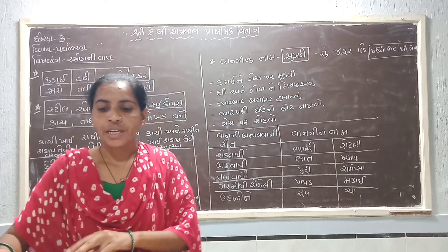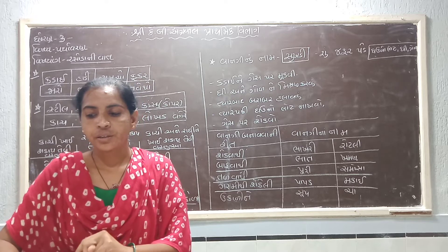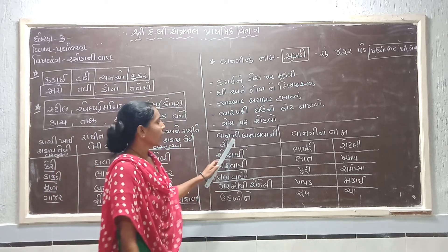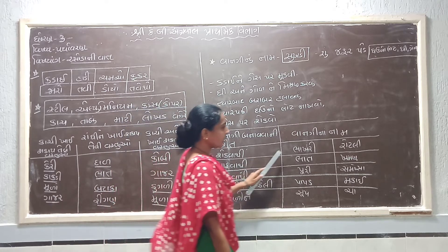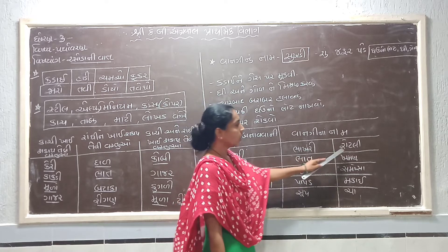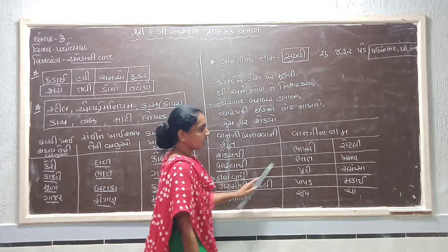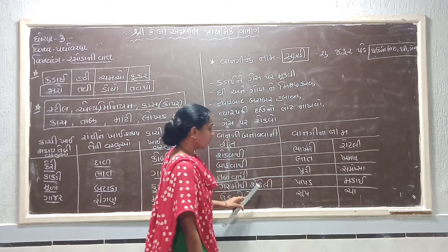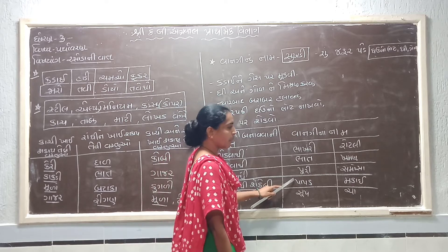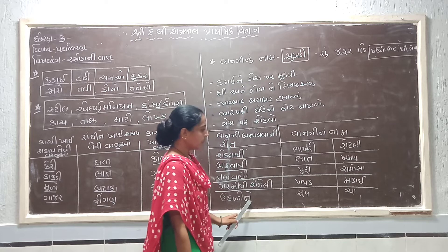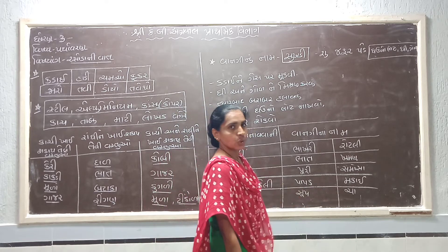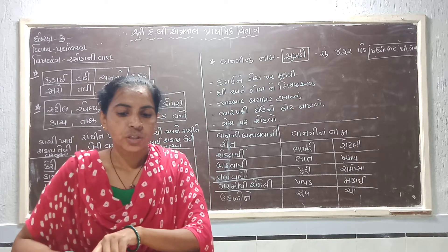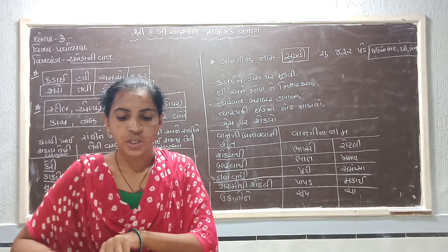એના પછી વાની બનાવવાની રીત અને વ્યંજનોના પ્રકાર જોઈએ. ભાત અને ખમણ, એ ઉદ્ભવ. એ પછી તળવાની વસ્તુ: પૂરી અને સમોસા. ગરમીથી સેકેલી વ્ ાની: પાપડ; અને સૂર્ય પ્રકાશ ઉપર સૂકવેલ: આ બધી રીતો.